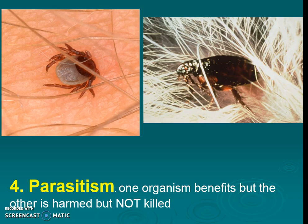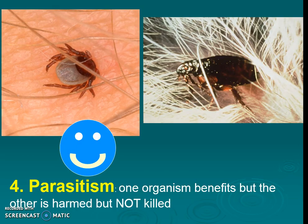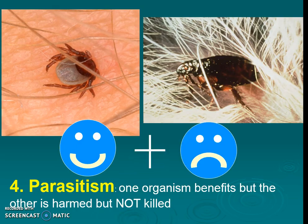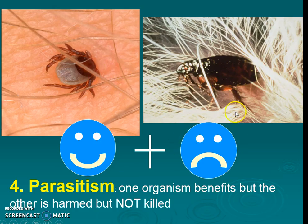Next is parasitism. Parasitism is when one organism — the parasite — benefits, while the other organism is harmed. Importantly, the parasite does not intend to kill the host, because it prefers to return again and again to extract what it needs. Examples include ticks, fleas, mosquitoes, and parasitic worms.